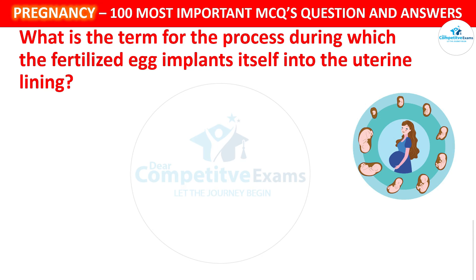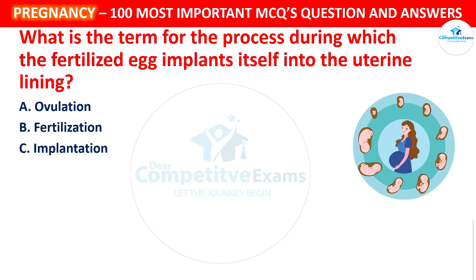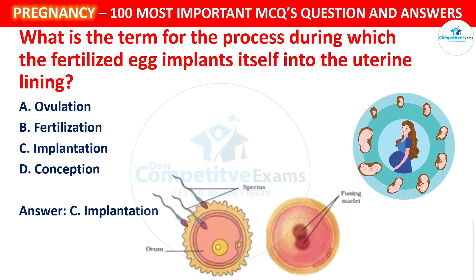Next question: What is the term for the process during which the fertilized egg implants itself into the uterine lining? Your options: Ovulation, Fertilization, Implantation, or Conception. The correct answer is Implantation. Implantation is the process in which the fertilized egg attaches itself to the uterine lining, marking the beginning of pregnancy.